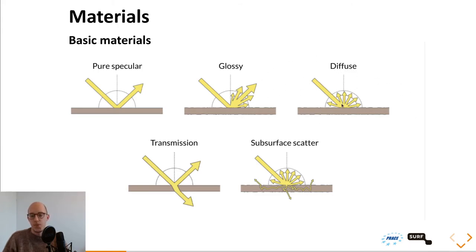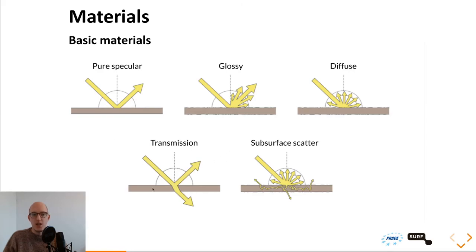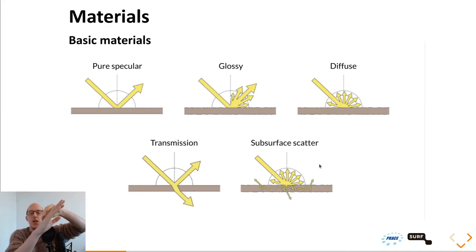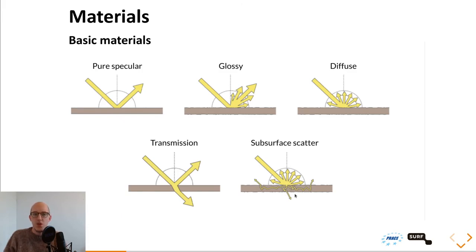The transmissive material — for example glass — can refract into and out of the glass based on the index of refraction, which determines which angles of incidence are reflected and which refract through. Subsurface scatter is like your skin: shine a light from behind and it looks red. On the surface it behaves like diffuse, but some light rays enter the material, bounce around inside, and shoot out again.